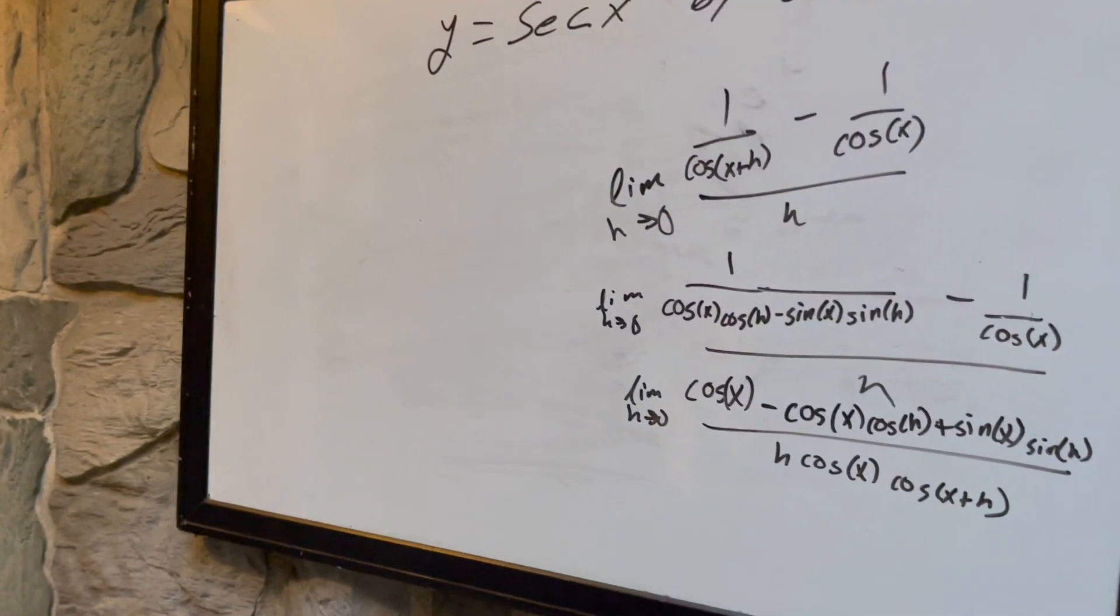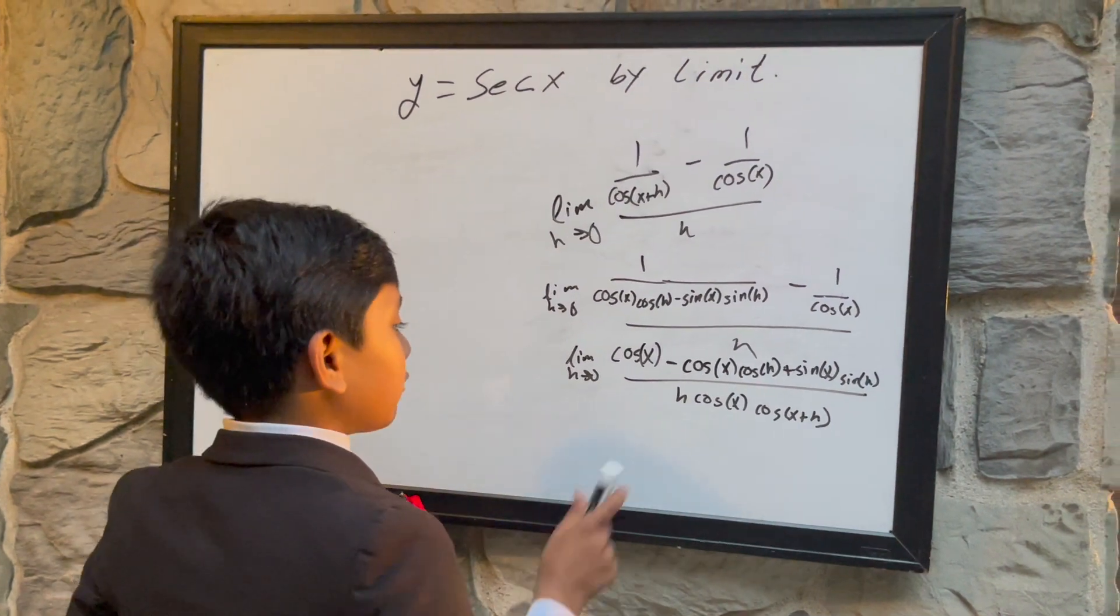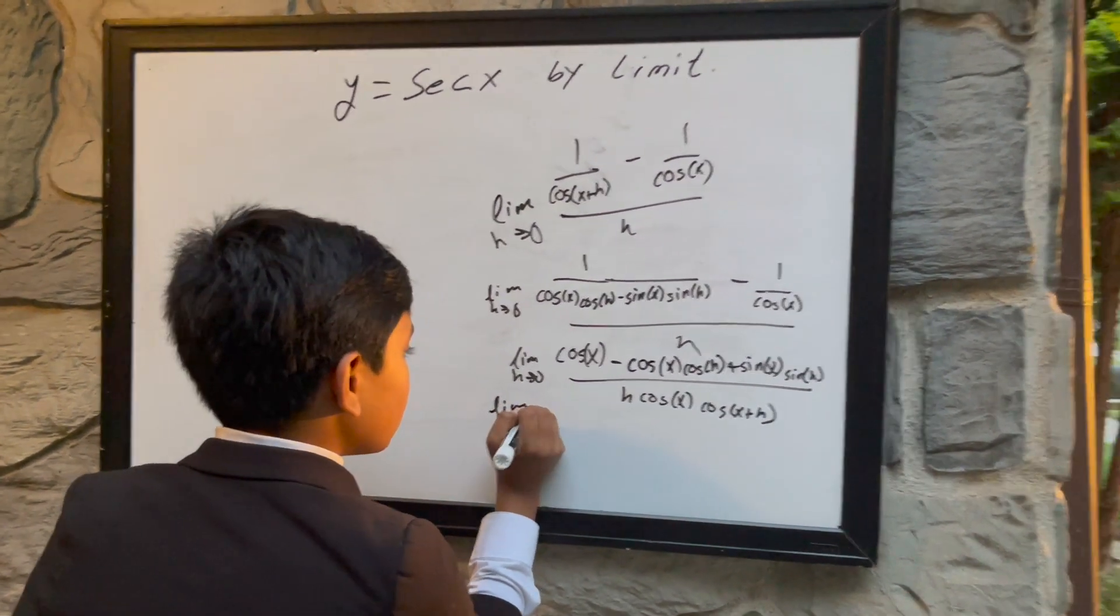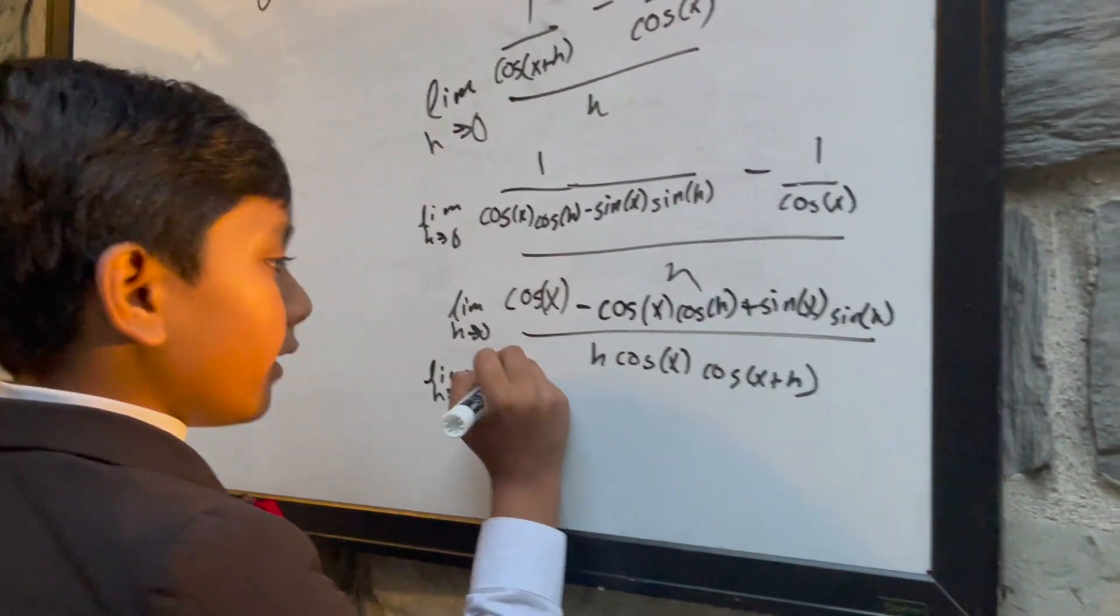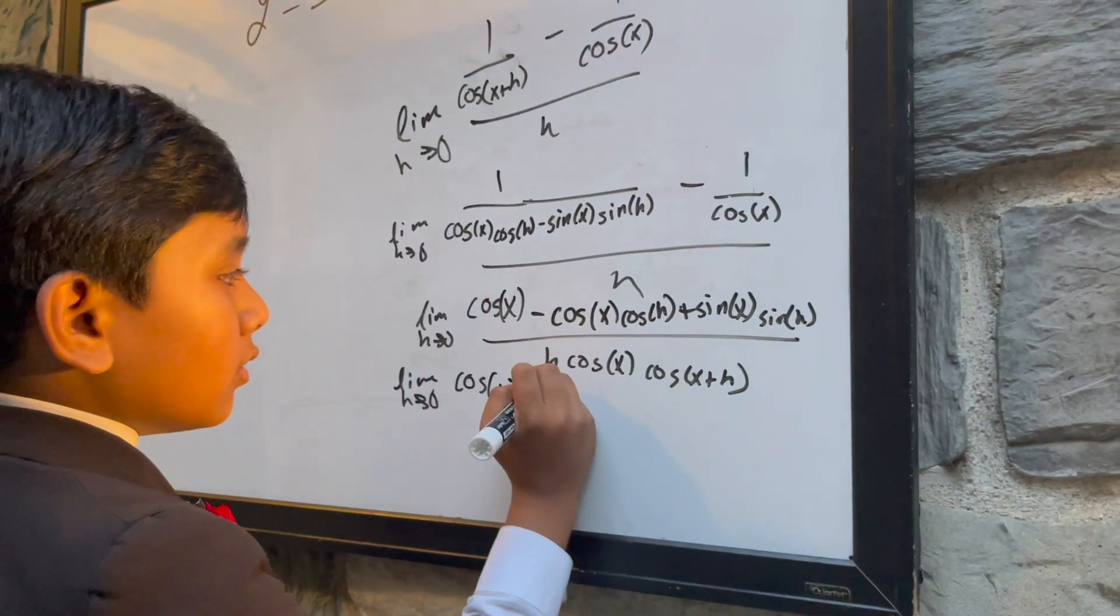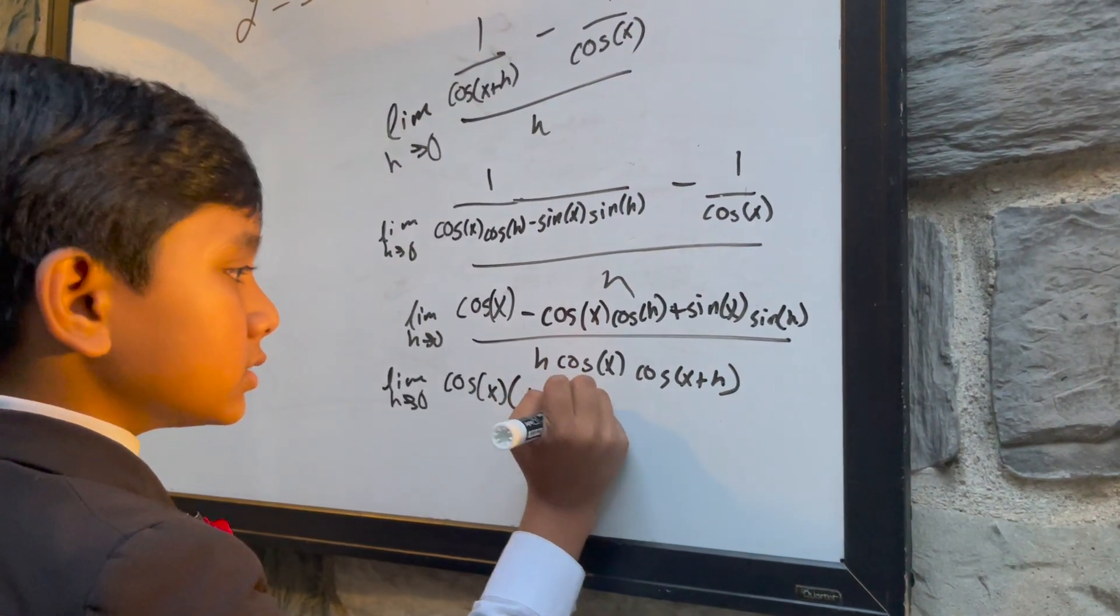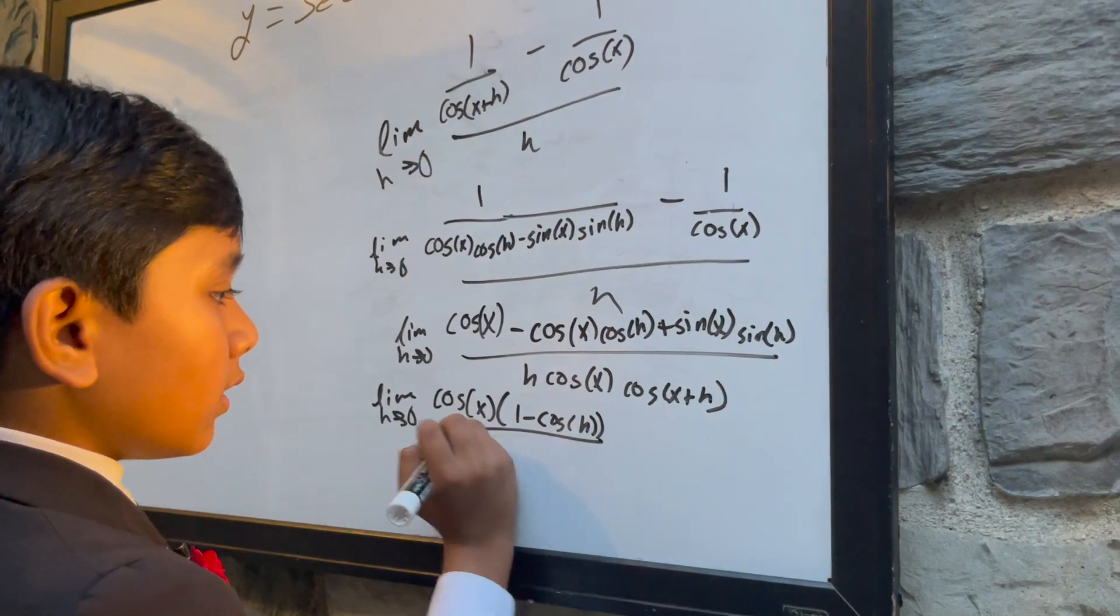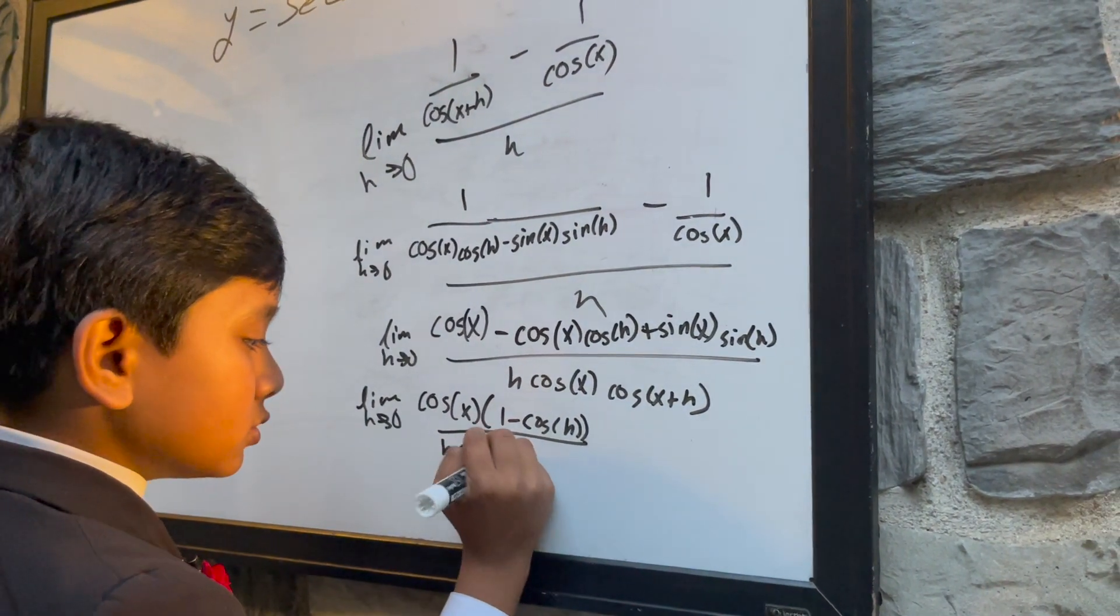Now, mama mia, we're going to factor out cosine of x from what we can. So, we have cosine of x and then 1 minus cosine of h over h cosine x times cosine x plus h.